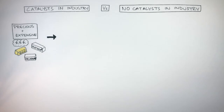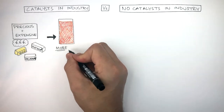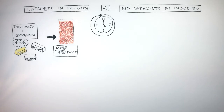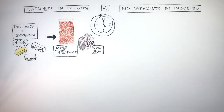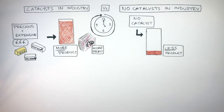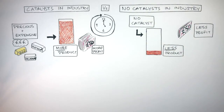Although catalysts may be expensive to buy, they increase the rate of reaction so more product is formed in the same amount of time. This allows companies to make more profits which outweighs the initial cost of the expensive and precious catalysts. If a company chooses to use no catalyst in the same chemical reaction, this results in less product being formed in the same amount of time as the rate of reaction is slower, resulting in the company making less profit as they have less product to sell.